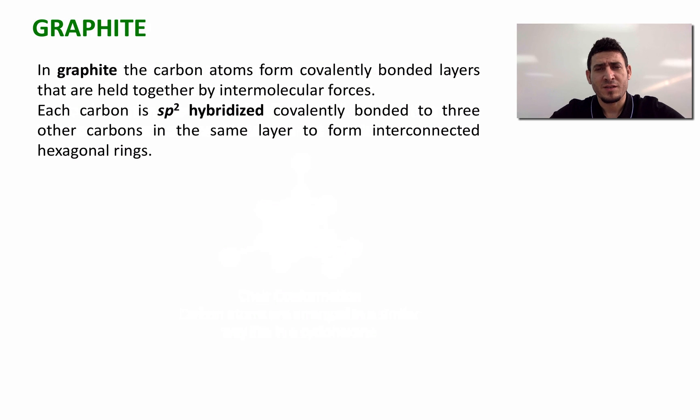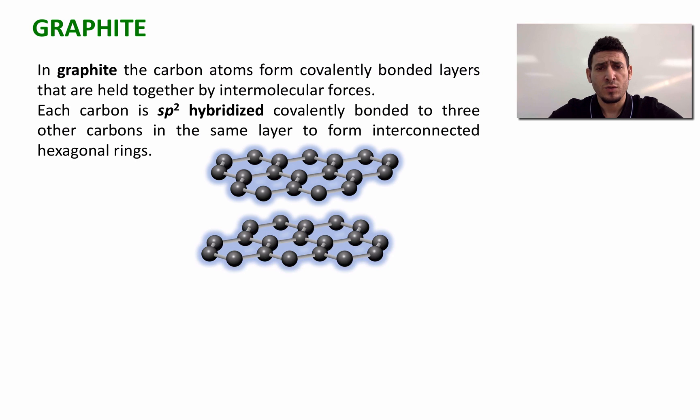Let's move on now and discuss graphite, where every carbon atom is connected to three other carbon atoms. The geometry around each carbon atom is trigonal planar, which suggests that the hybridization around each carbon atom is sp2. Each sp2 hybridized carbon will covalently bond to three other carbon atoms in the same layer to form interconnected hexagonal rings. These layers will overlap on each other to form the solid. The layers are connected by weak intermolecular interactions.